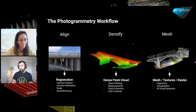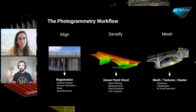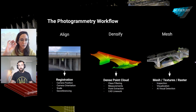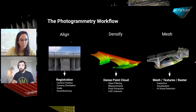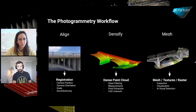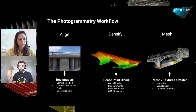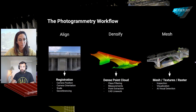After alignment is done, we go to the second step: densification. The alignment step gives us camera positions and a sparse point cloud — a series of scattered points that resemble our object. Those are the tie points the software picked up automatically. If we want more detailed models, we need to create more of them. This densification step is similar to alignment but does much more of it, and the result is what we call a dense point cloud.